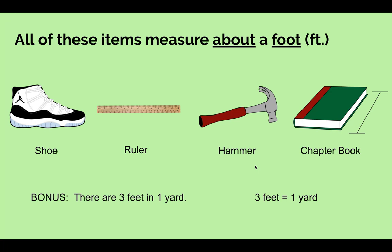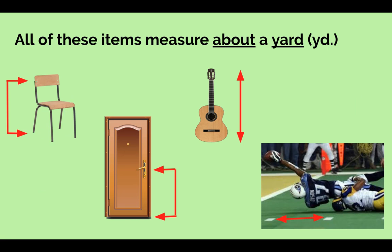Remember, there are three feet in one yard — three feet equal one yard, and you'll need to know that later. All of these items measure about a yard: from the bottom of the chair to the top of the chair is a yard. The bottom of the door to the door handle is about a yard. A guitar is about a yard. And if you watch football, the length of the hash marks is a yard. One yard equals three feet.